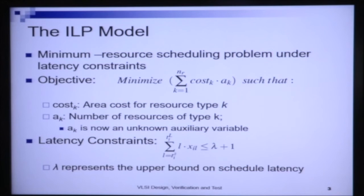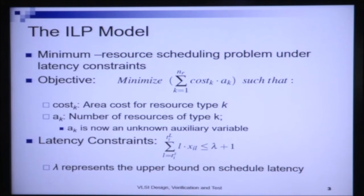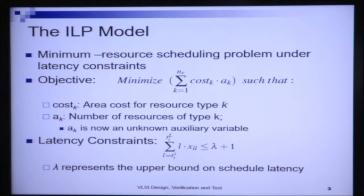The latency constraint is specified by noting that there is a correction: the variable i should be n, the sink node. What I want is that the start time of the nth operation — the sink node — should be at most lambda plus 1. For all actual operations, they must be scheduled within lambda, and the start time of the sink node should be less than or equal to lambda plus 1.